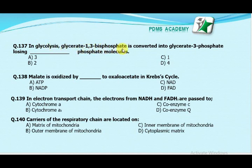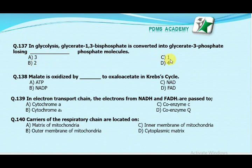Our next MCQ is: in glycolysis, glycerate 1,3-bisphosphate is converted into glycerate 3-phosphate using which phosphate molecules? Option A: three phosphate molecules. Option B: two phosphate molecules. Option C: one phosphate molecule. Option D: four phosphate molecules. Our correct answer is C, one phosphate molecule.